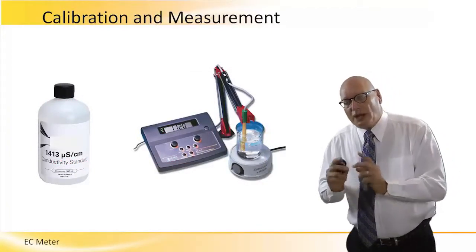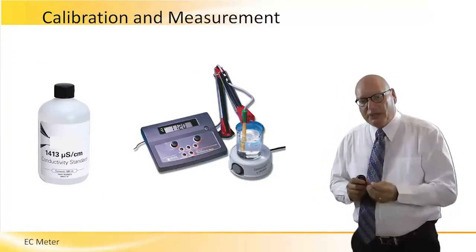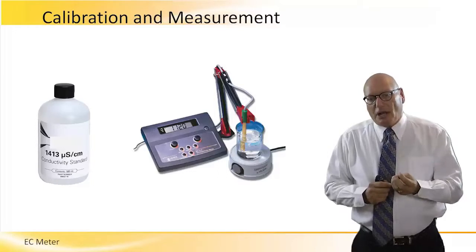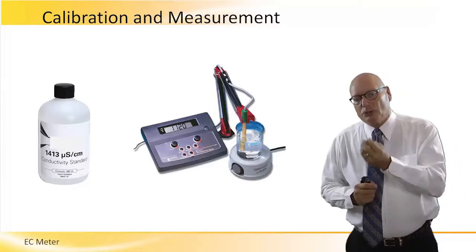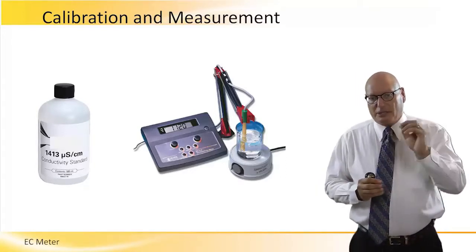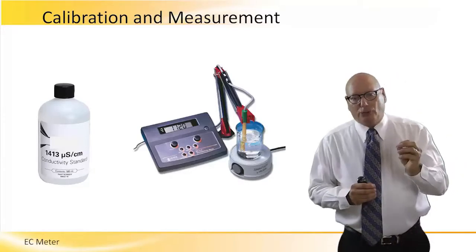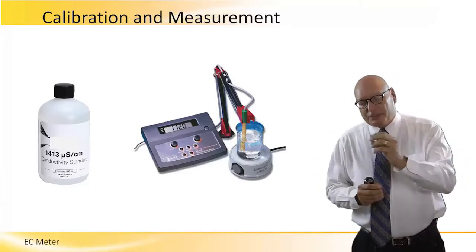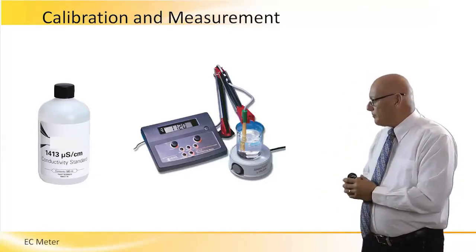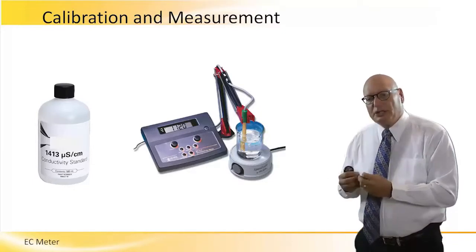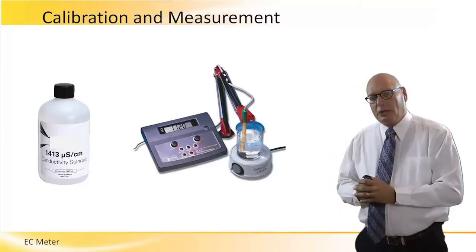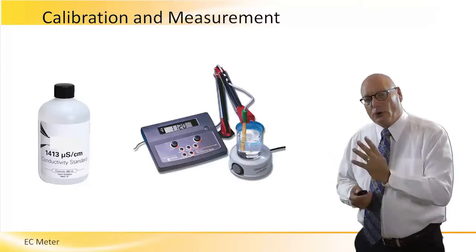In order to calibrate that particular system, we have specific bottles with materials which are actually used as a calibration solution. There are conductivity standards — for example, in this particular case, we have 1413 microsiemens per centimeter. And here on the right-hand side, there is a picture demonstrating how it's being tested. We can actually see the EC meter inside, dipped into the solution. Within it, there are four electrodes.